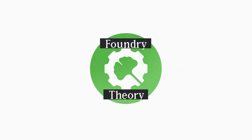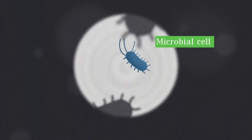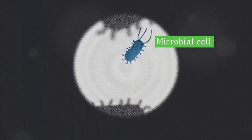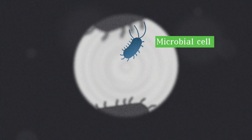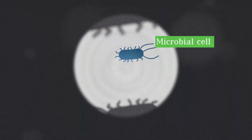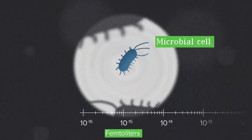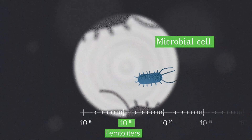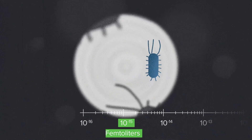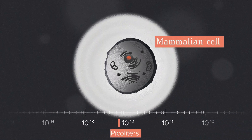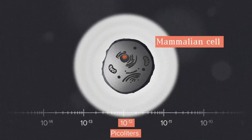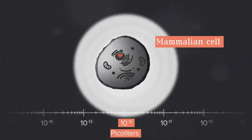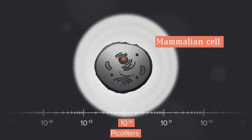The journey of every bioprocess begins with a single cell. Here at Ginkgo Bioworks, we work with both microbial and mammalian cells. A typical microbe, like a yeast or bacterium, is a few femtoliters in volume — that's 10 to the negative 15th power, or one quadrillionth of a liter. A typical mammalian cell is a hundred or a thousand times larger, with a volume of a few picoliters.